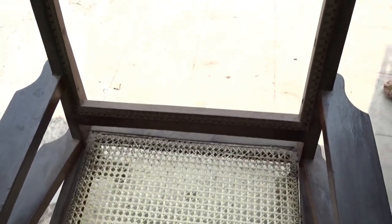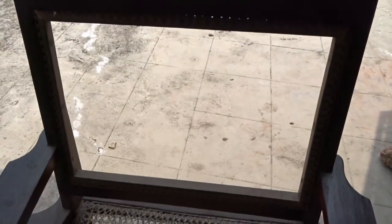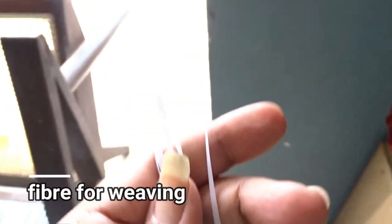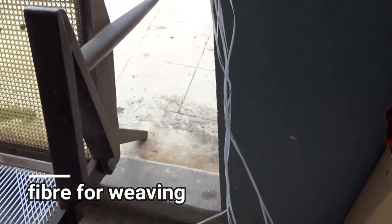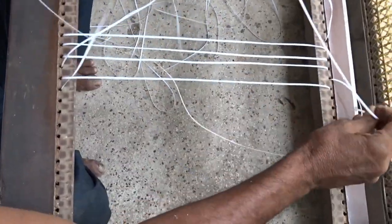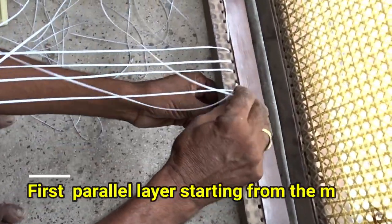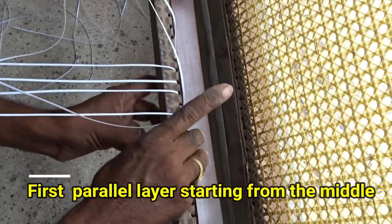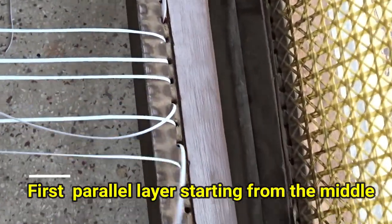In the first place the old weaving has been removed and cleaned. The initial fibers have been rubbed with wax for easy movement through the holes, starting from the center of the seat the weaving is done.